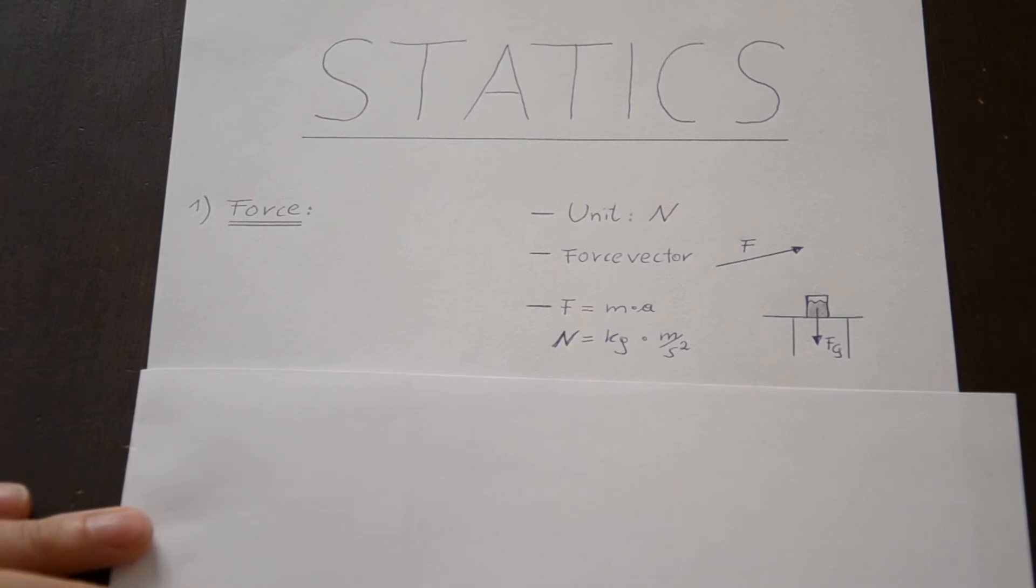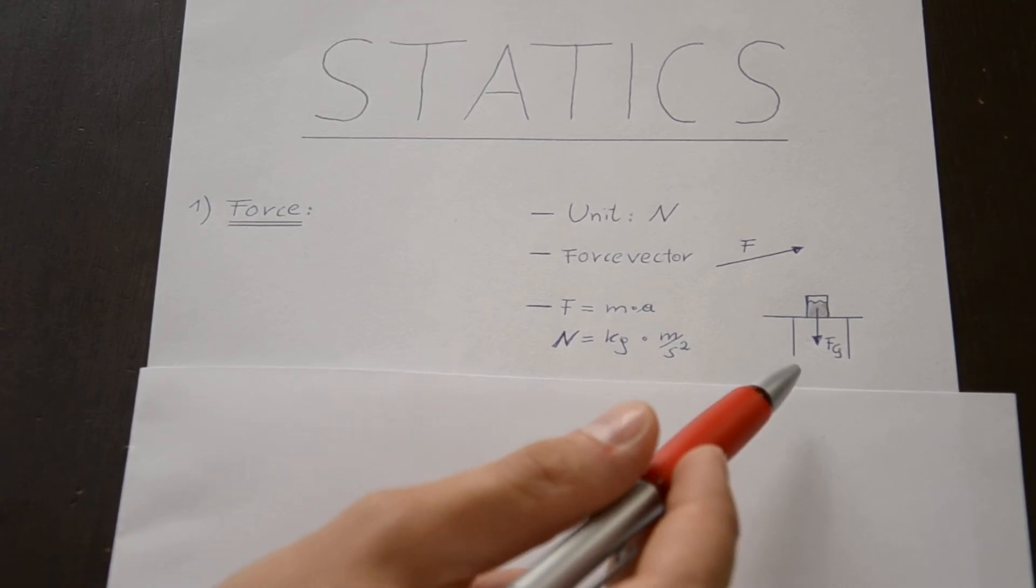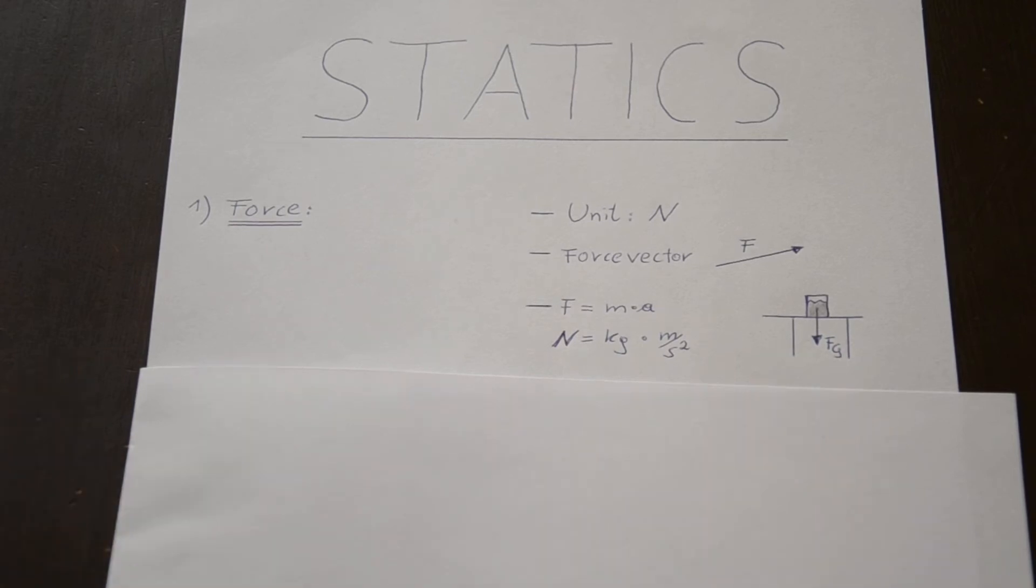And internal forces, on the other hand, are forces which we can't see at first time, but we can think about that. If we go back to the glass of water, we said that it has a weight force. Okay. So if just the weight force would act on the glass and no other force, the glass would drop down on the floor.